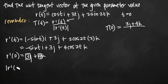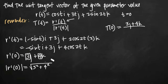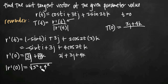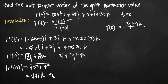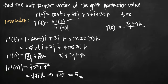The magnitude of r prime of zero equals the square root of 3 squared plus 4 squared. If there were an i component, for example 2i plus 3j plus 4k, we'd have 2 squared plus 3 squared plus 4 squared inside the square root. Simplifying, we get the square root of 9 plus 16, which is the square root of 25. Since we're dealing with real distances, we take the positive value, so the magnitude equals positive 5.